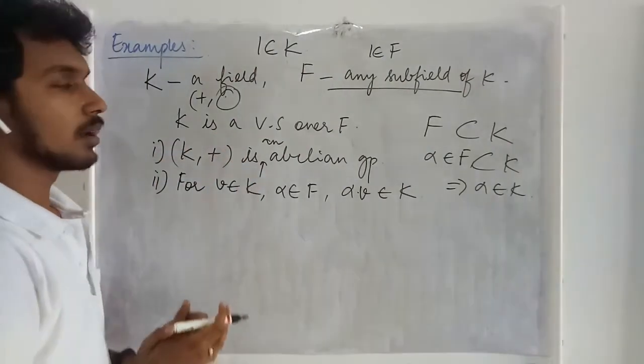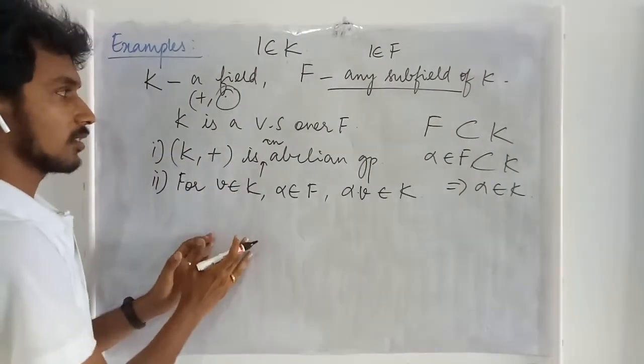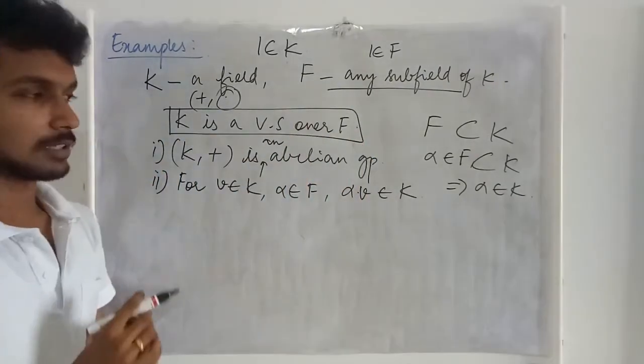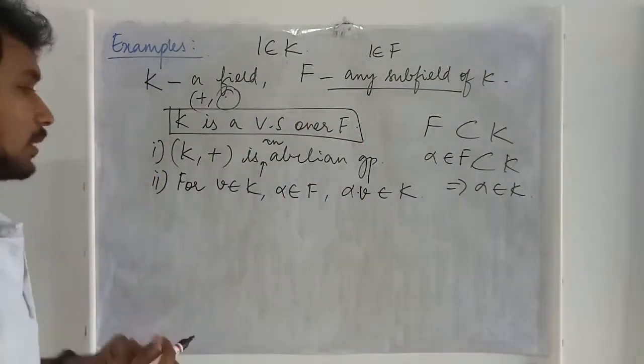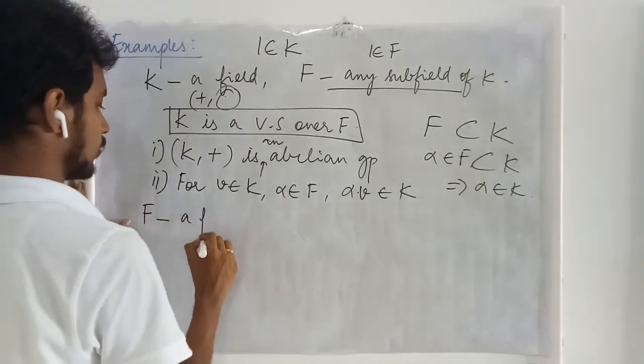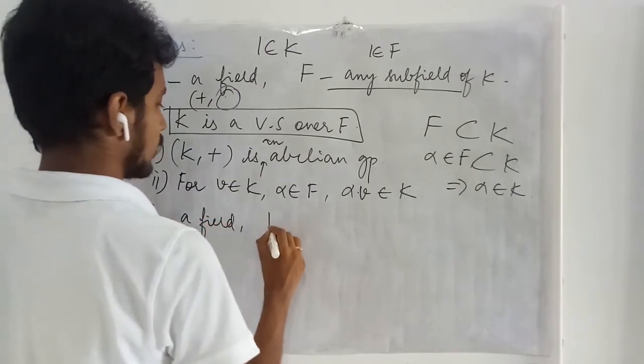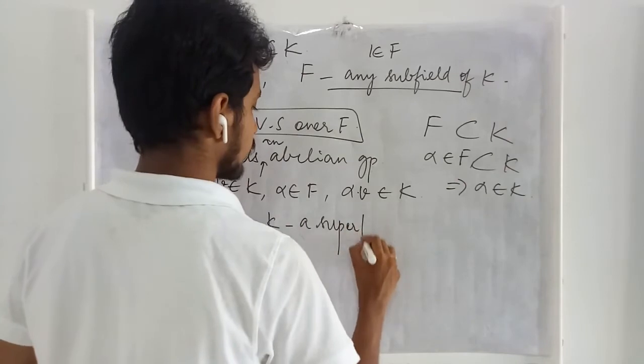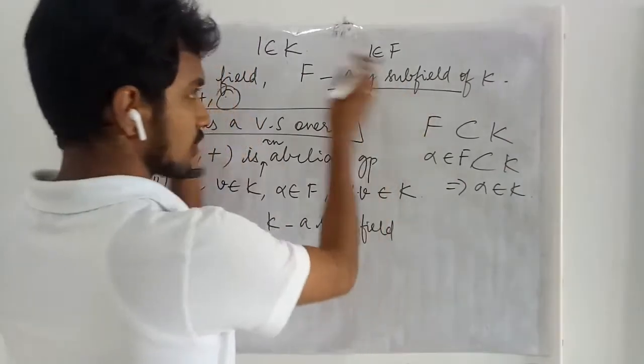Having satisfied all the conditions to be a vector space we can come to the conclusion that this is a vector space. Now what happens if let me take this to be a field and K is a super field.